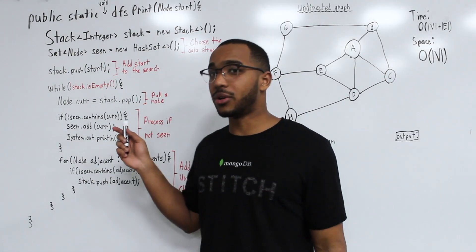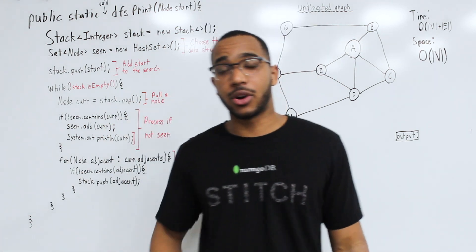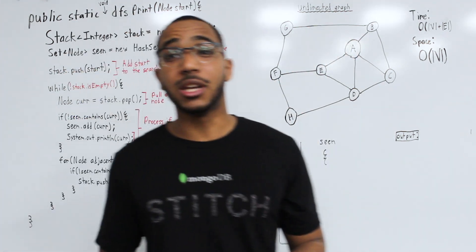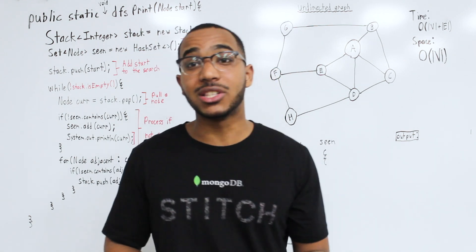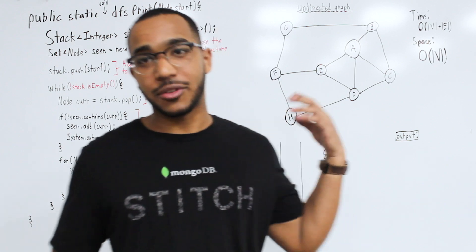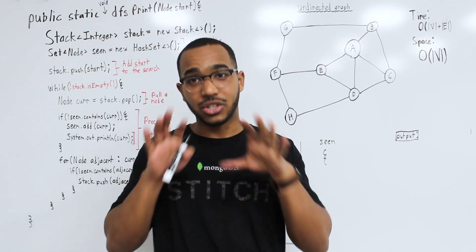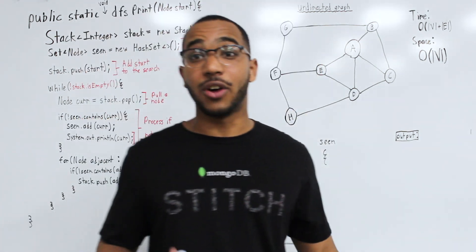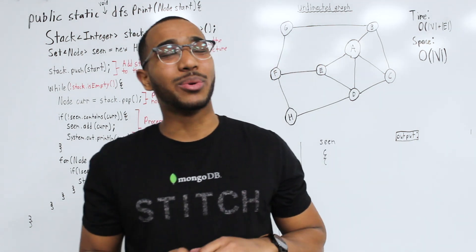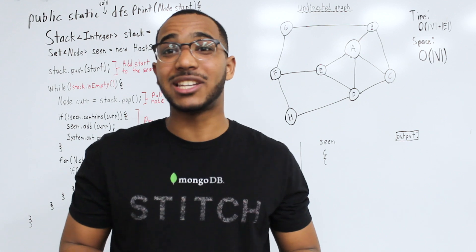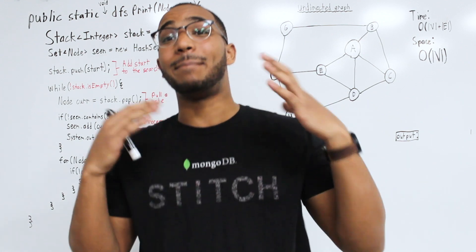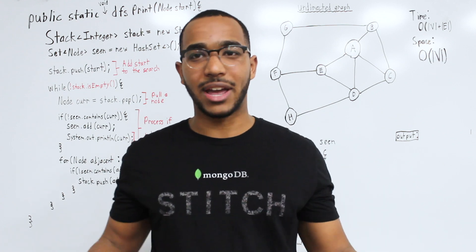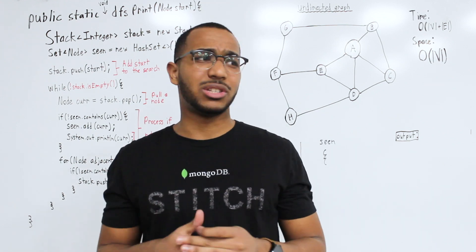For the depth first search function, we pass in a start node and print every node in the graph. The time complexity is O(V + E), where V is the vertices and E is the edges — we touch V vertices and iterate over their edges which sums to E. The space complexity is O(V). For DFS with a balanced tree, it's O(H) where H is the height, since at most the height of the tree is on the stack. For an unbalanced tree it would be O(V).